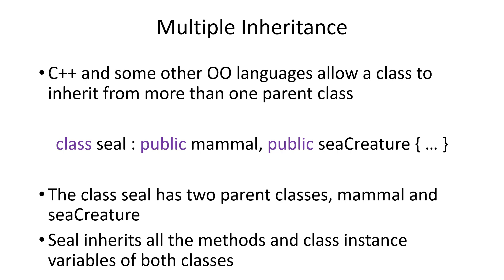While Java does not support it, C++ and several other object-oriented languages allow a class to inherit from more than one parent class. In this example, the class Seal inherits from the class Mammal and the class Sea Creature, so the Seal class has all the methods and instance variables of both classes.